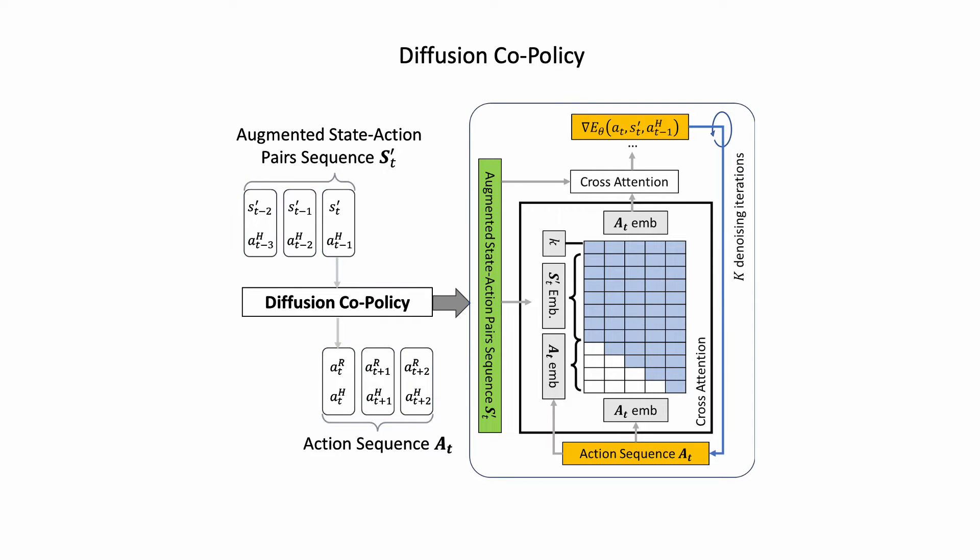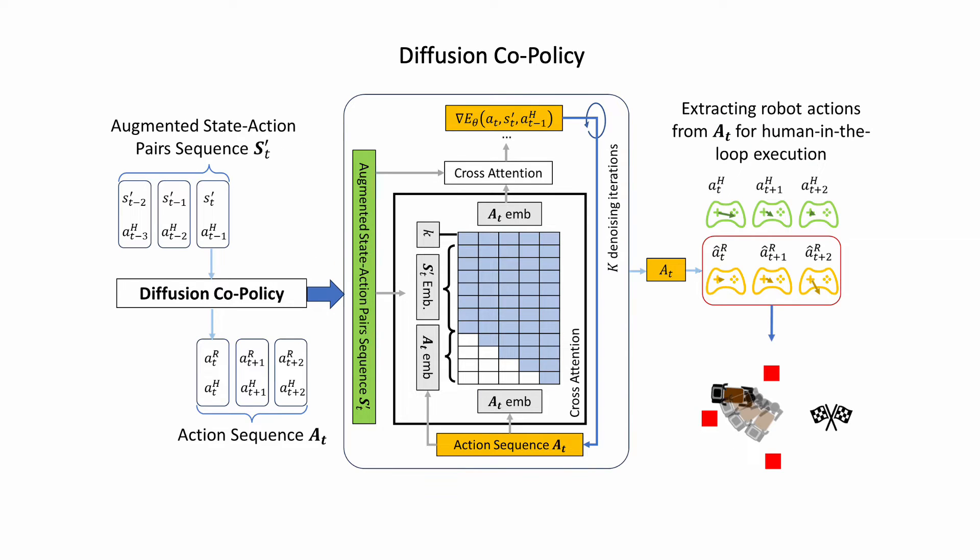The inputs are embedded, then concatenated as conditioning variables for example noise, which undergoes several denoising iterations through a transformer-based decoder to produce a sequence of joint human-robot actions. Predicted robot actions are then directly executed on the task with a live human in the loop.